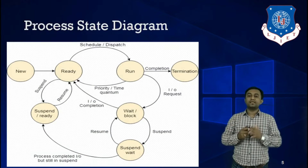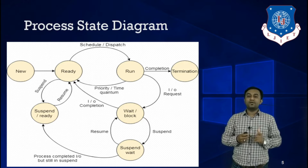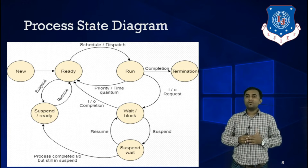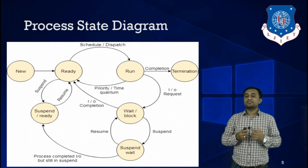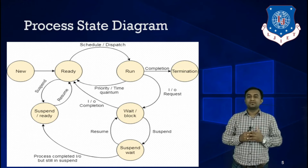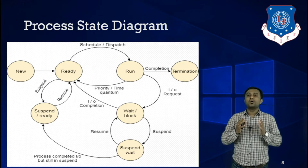This is the diagram for the Process State. As we saw in the previous slide, a State Diagram is comprised of a set of states and transitions between states. In this figure, the various circles represent the various states of a process, and the arrows between the circles represent the transitions between states.